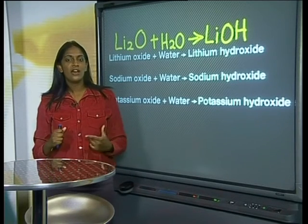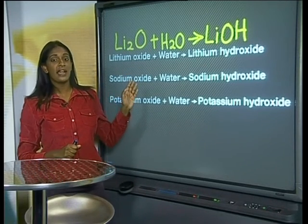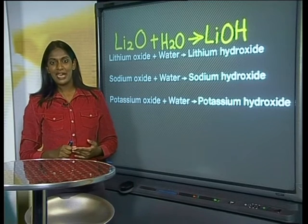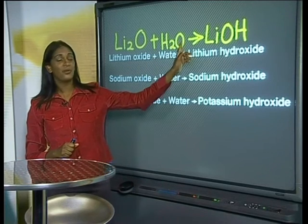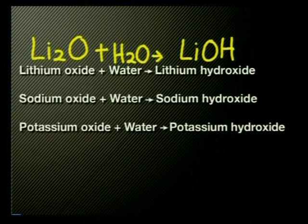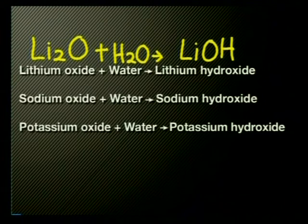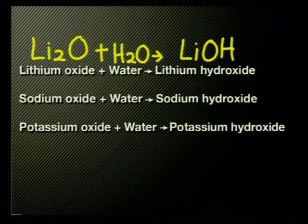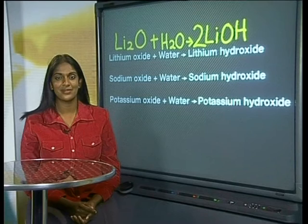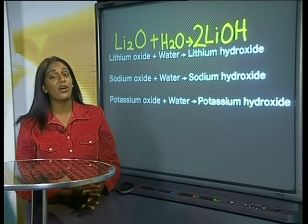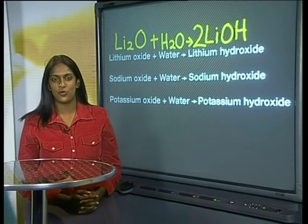We now need to check that the equation is balanced. Remember, we count the number of atoms of each element on each side of the arrow. So for us to have a balanced equation, we will need to double the number of atoms on the right-hand side. We do this by writing a 2 in front of the LiOH. Notice that the ratio of the molecule is in the simplest form, so this balanced chemical equation is an accurate representation of the chemical change we have observed.